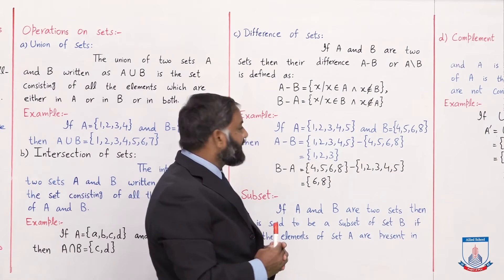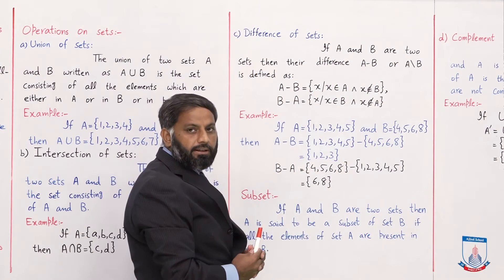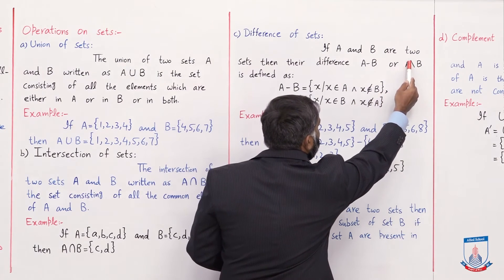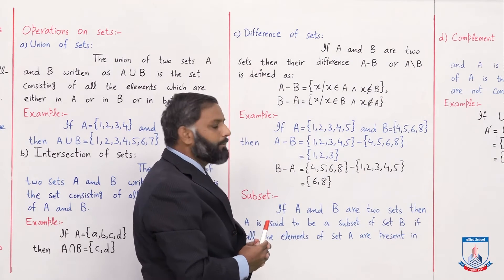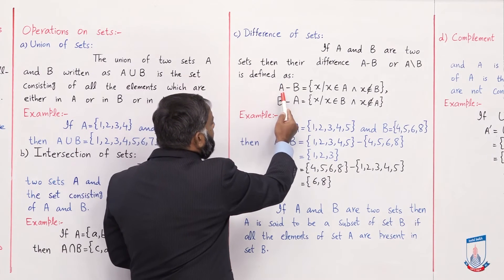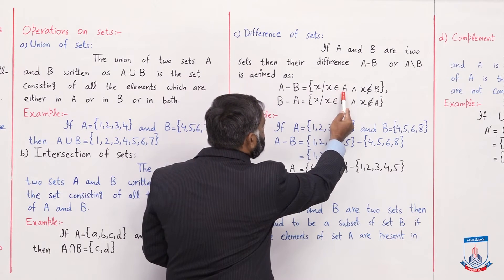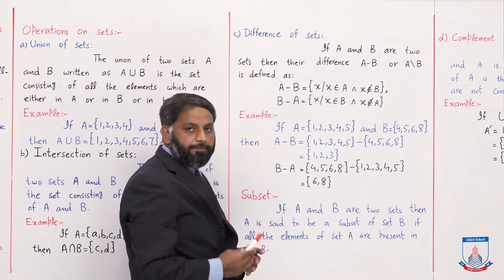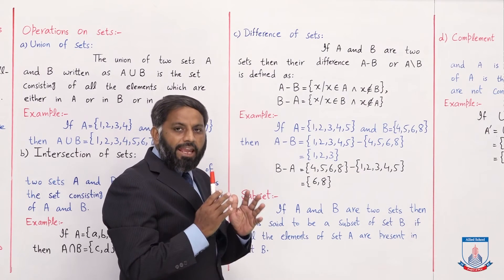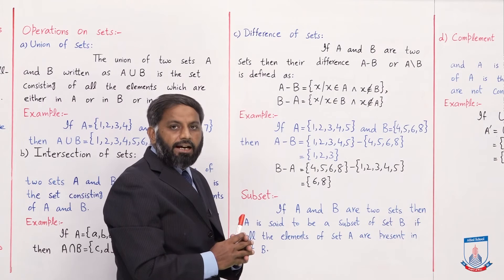Next type: difference of sets۔ If A and B are two sets, then their difference A − B (جسے A \ B بھی لکھ سکتے ہیں) is defined as: A − B = {x | x ∈ A and x ∉ B}۔ Means A − B میں وہ elements آئیں گے جو set A کو belong کرتے ہیں لیکن set B کو belong نہیں کرتے۔